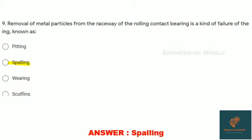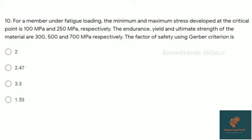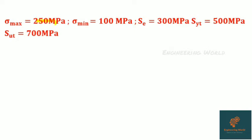Question ten: For a member under fatigue loading, the minimum and maximum stress developed at a critical point is 100 MPa and 250 MPa respectively. Endurance, yield, and ultimate strength are given as 300, 500, and 700. Factor of safety using Gerber's criteria. This is important; many students made mistakes in this question. Sigma max is given 250 MPa, sigma mean is 100 MPa, endurance strength 300 MPa, yield strength 500 MPa, ultimate strength 700 MPa.